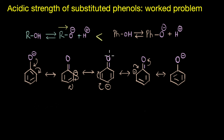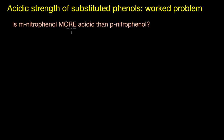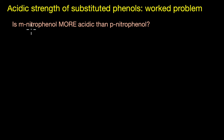Let's explore that by solving a question. The question is: is metanitrophenol more acidic than paranitrophenol? Here we have the substituent which is a strong electron withdrawing group — the nitro group. In one case we have the nitro group at the meta position, and in the other case we have it at the para position.